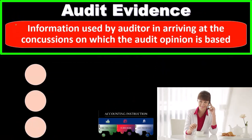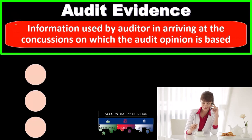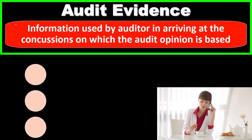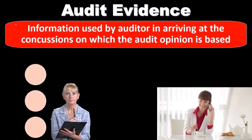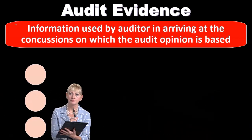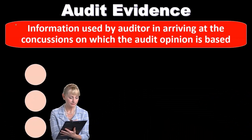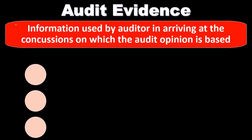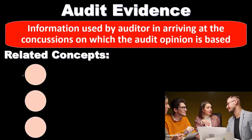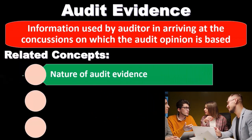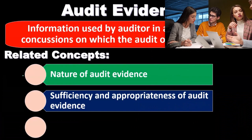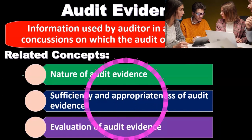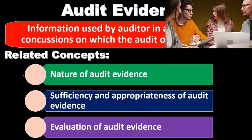Audit evidence is information used by the auditor in arriving at conclusions on which the audit opinion is based. If an auditor gives an opinion, they should be able to provide evidence for it. Without proper evidence, they didn't do their due diligence. Related concepts include the nature of audit evidence, sufficiency and appropriateness of audit evidence, and evaluation of audit evidence.